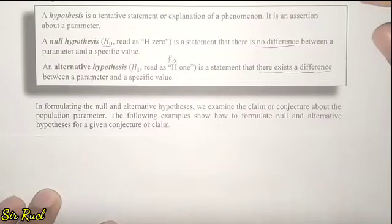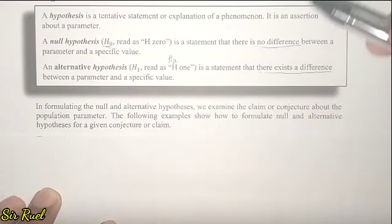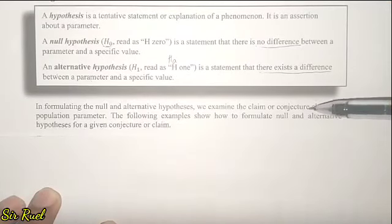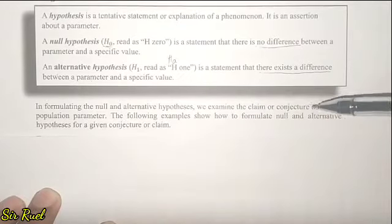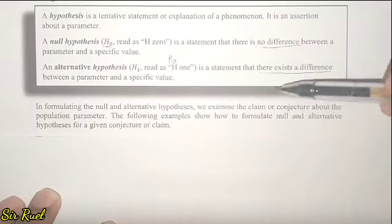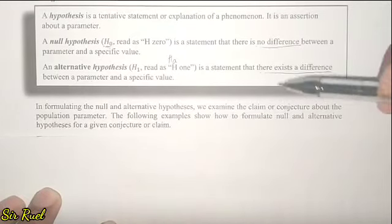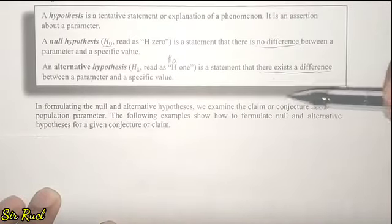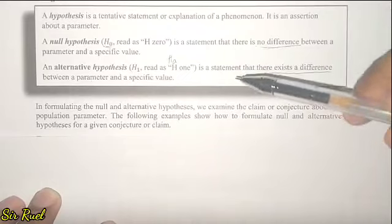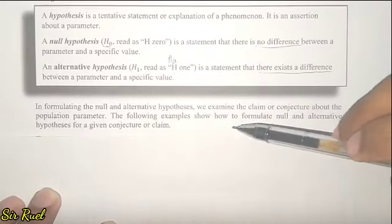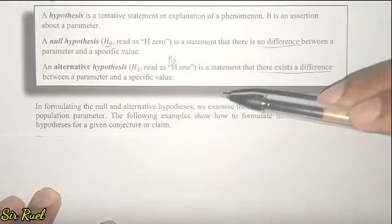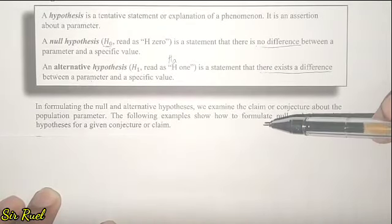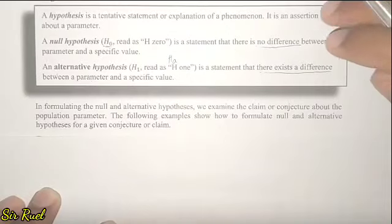In formulating the null and alternative hypothesis, we examine the claim or conjecture about the population parameter. The following examples show how to formulate the null and alternative hypothesis for a given conjecture or claim.